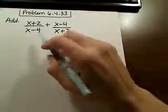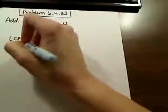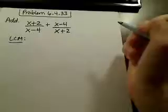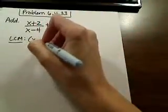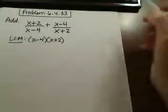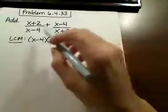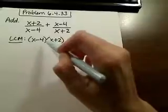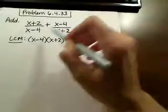So in this problem, there's no factoring to be done in the denominator, so we can just go straight to identifying the LCM, and the LCM here is going to be x minus 4 and x plus 2. Now this will be our common denominator, so we want our denominators to look like this when we get done with the problem.